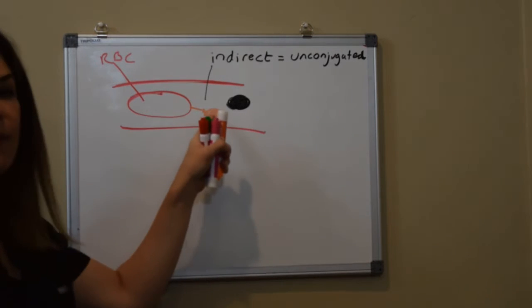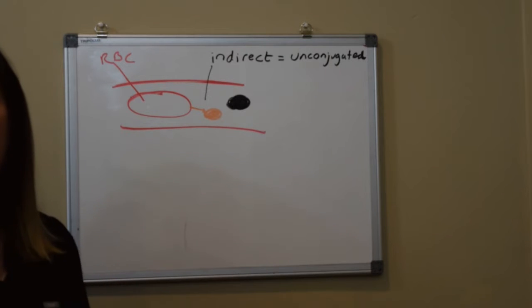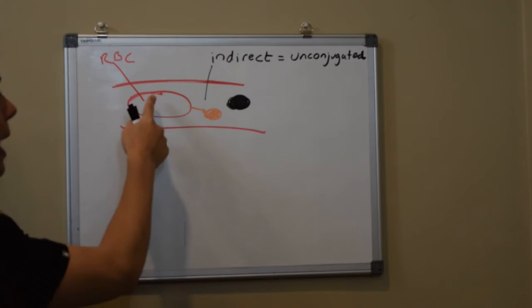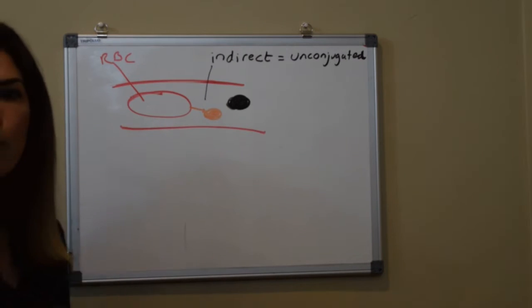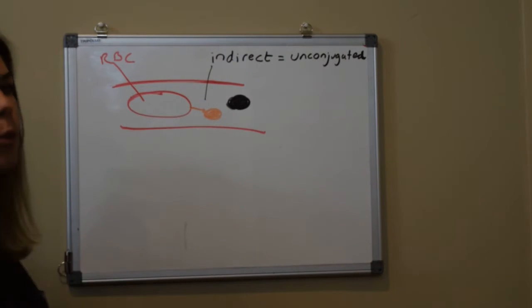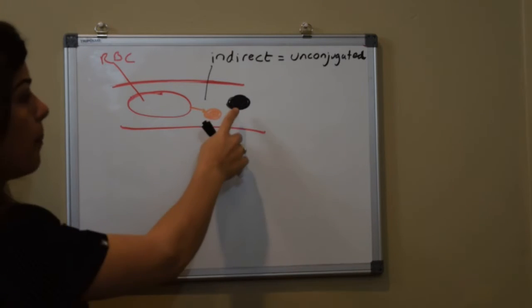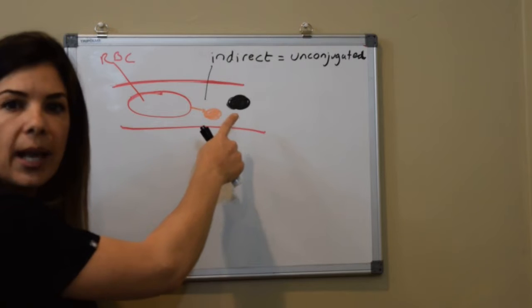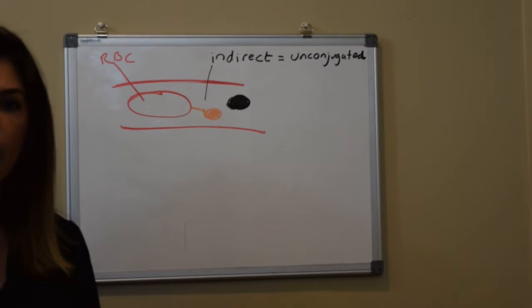I hope that you're already starting to think of all the different ways that bilirubin could be very elevated. Without talking about this more obviously one of the first ways would be if we had a really high number of red blood cells that were breaking down or those red blood cells were breaking down much faster than we'd expect. What if for example you had a really low albumin level? Babies that are really sick, they're septic or something, are going to have a low albumin level.